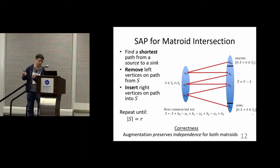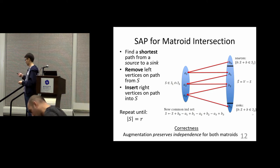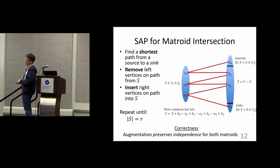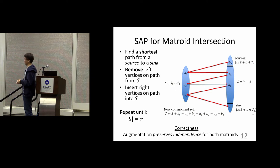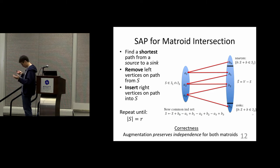For matroid intersection there is a key difference from bipartite matching: you cannot do just any augmentation. Instead, your augmentation must follow a shortest augmenting path from a source to a sink. Once you find such a path, you remove all the left-side vertices on the path and replace them with the right-side vertices. For example, given a path B0, A1, …, B3, you insert all the B's and remove all the A's. The key property is that this preserves independence for both matroids. Since the final solution has size R, you need R such augmentations.